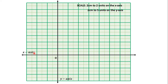Let's number the x-axis. The scale is 2 cm to 2 units, so after every 2 cm we increase by 2. From 0, the next number is 2, then 4, then 6, then 8, then 10, then 12, then 14. For the negative side, the same pattern applies but with negative numbers: negative 2, negative 4, negative 6, and so on.